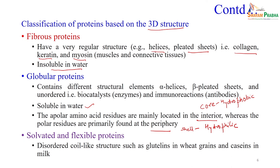One more category is solvated or flexible proteins, intermediate between globular and fibrous proteins. They include disordered coiled-like structures. Examples are caseins in milk and glutens in wheat grains — these are solvated as well as flexible proteins.